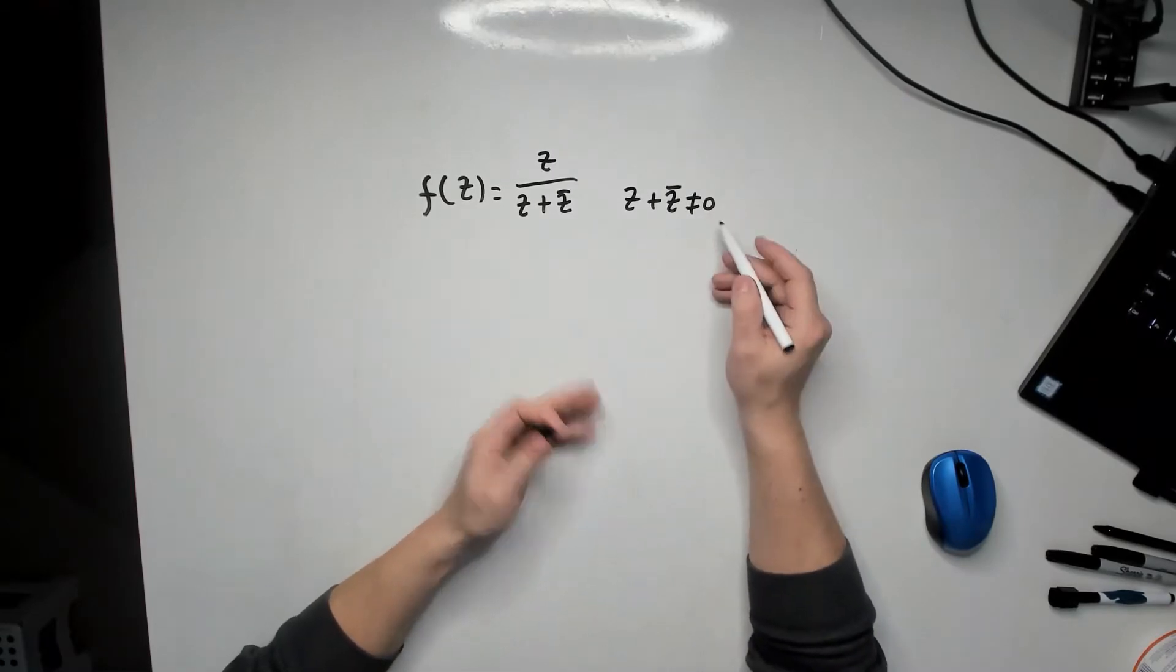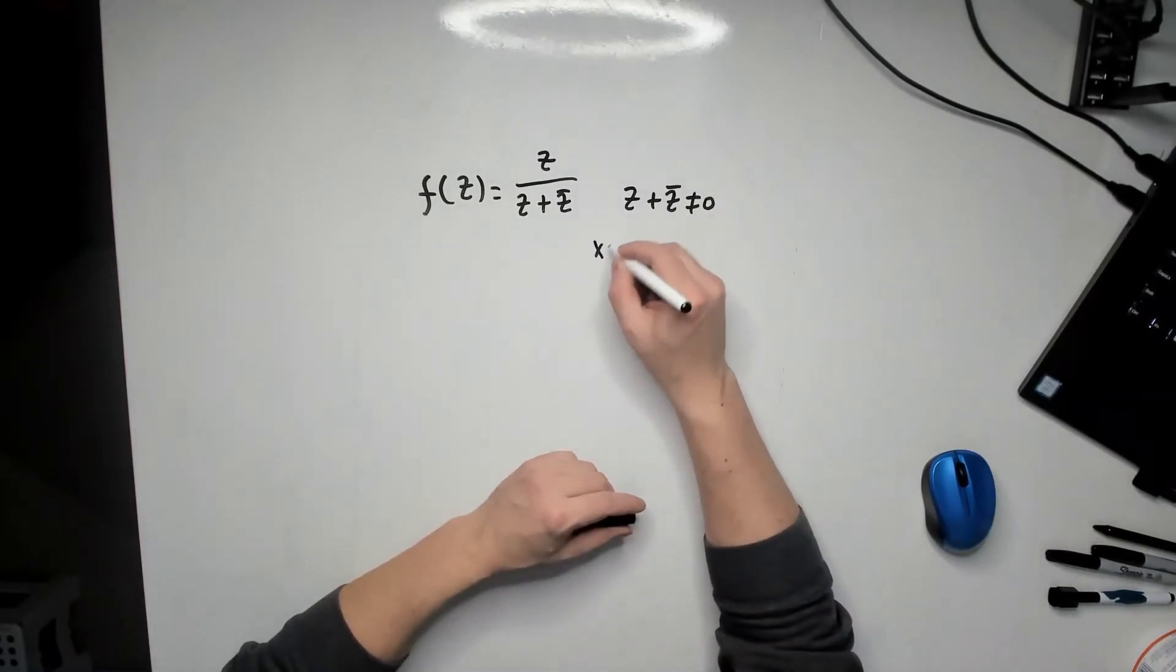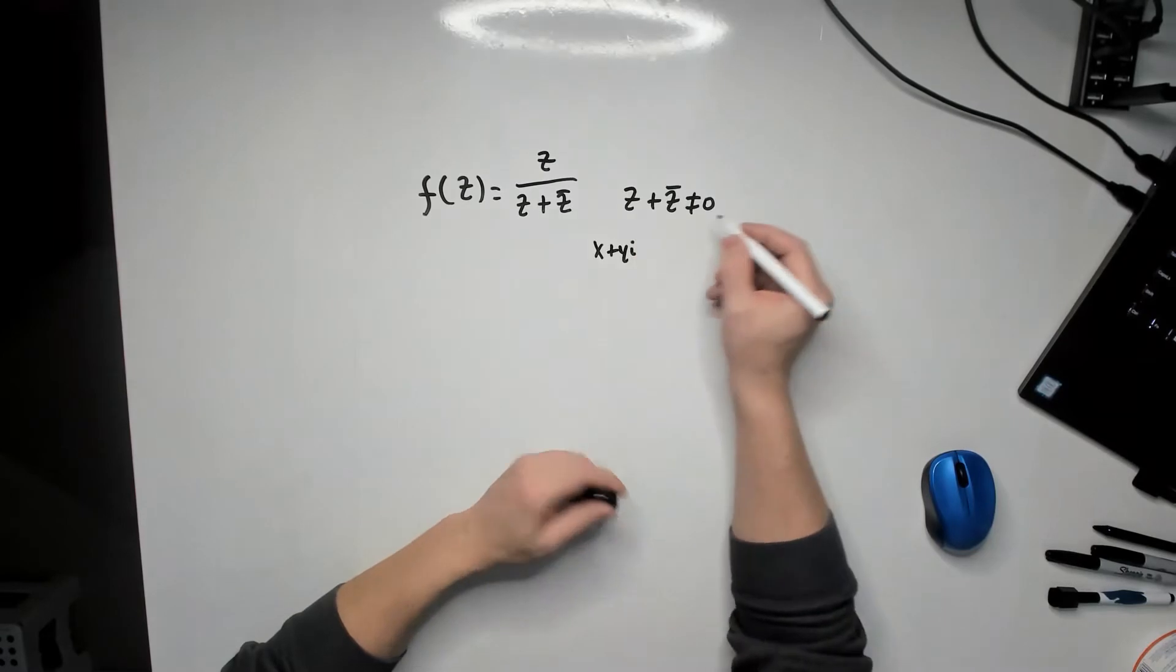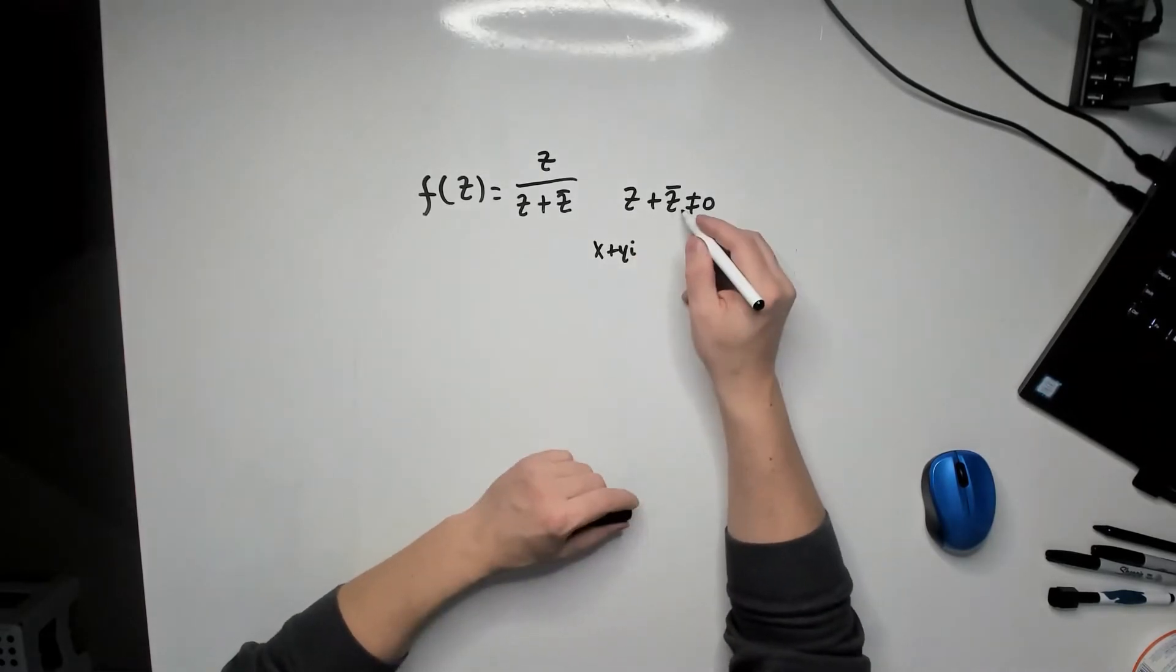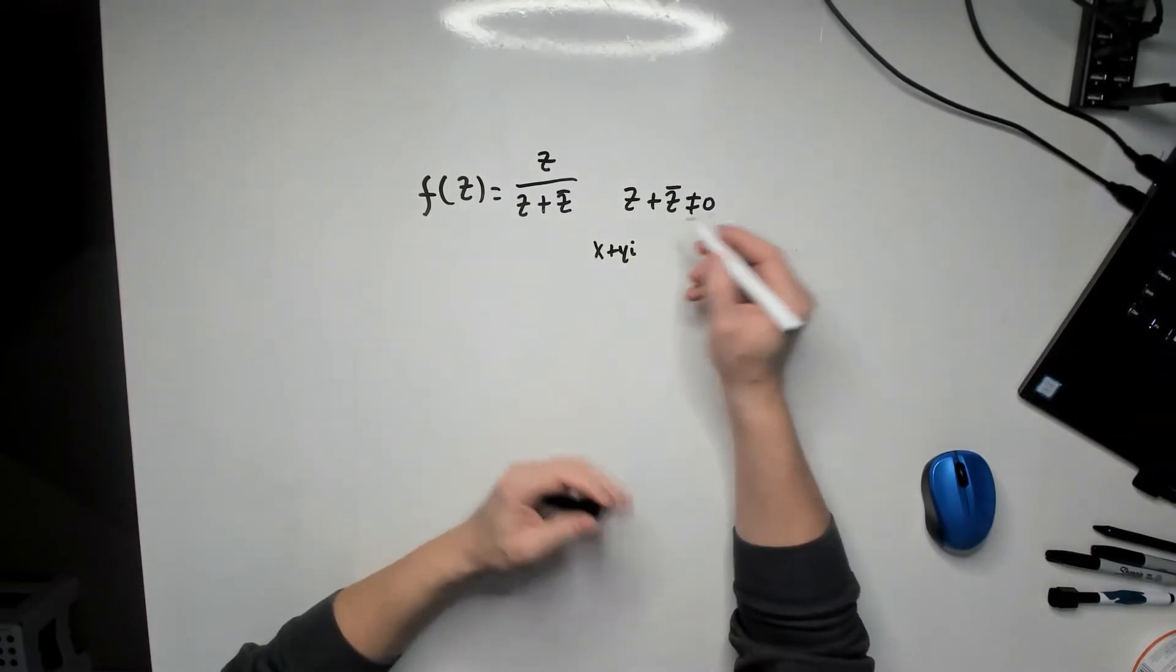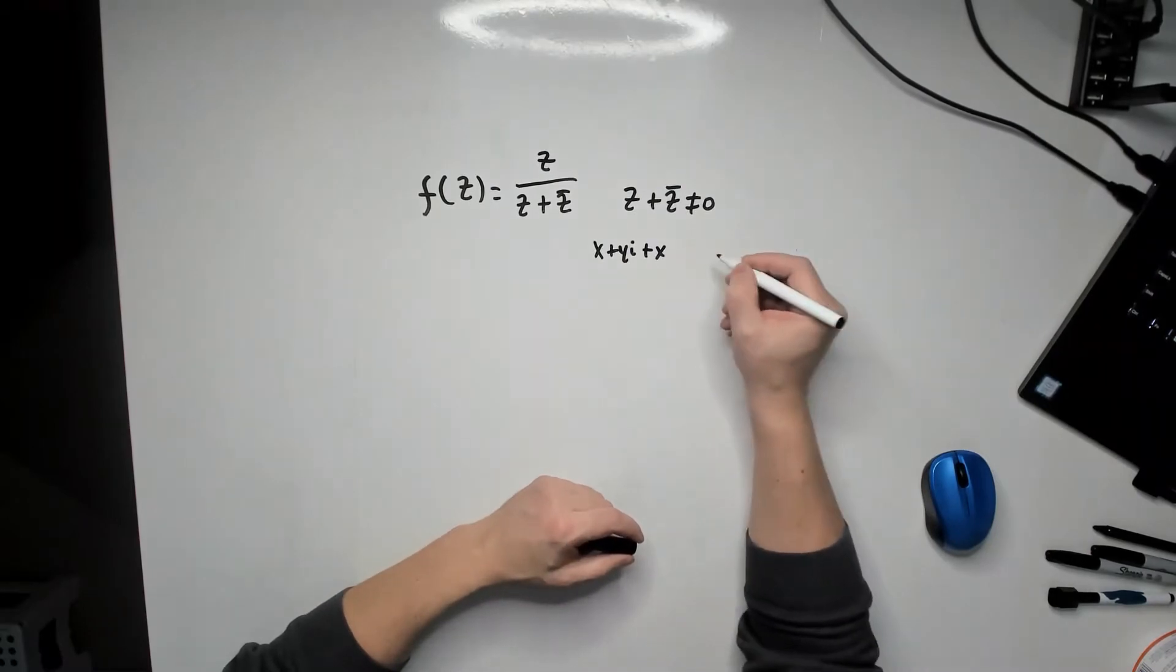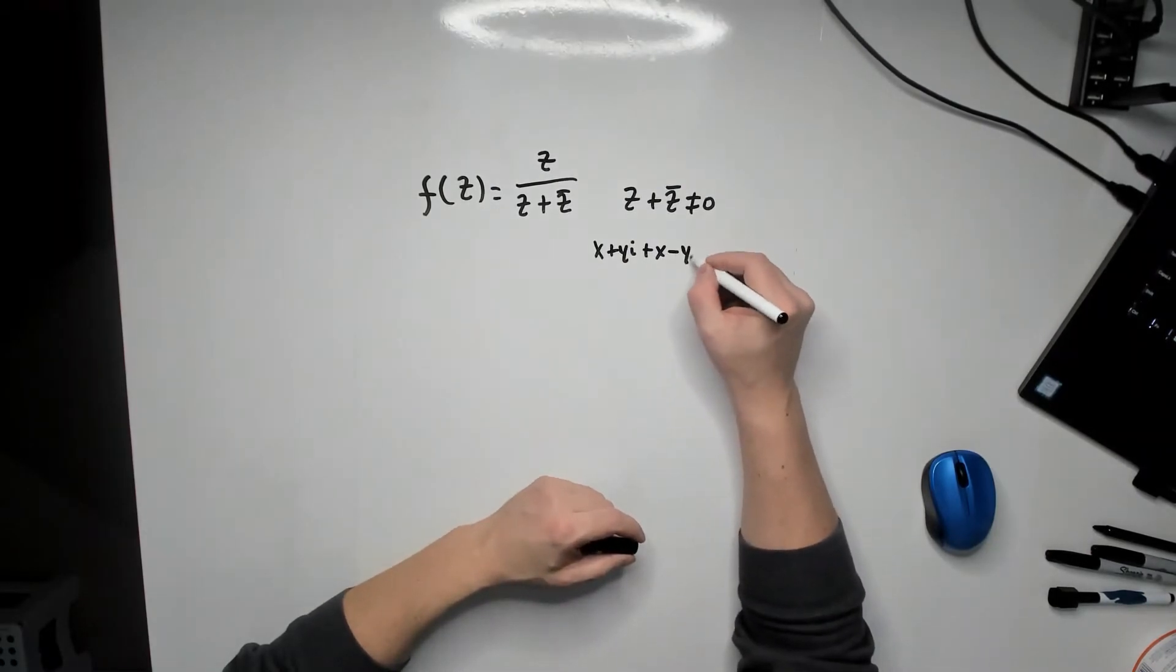What you can do is just replace z as follows, with x plus yi because that is the definition of z, and then replace z bar with the definition of z bar, which is x minus yi.